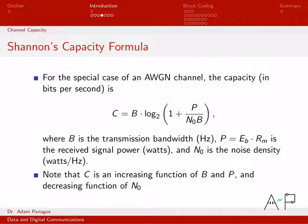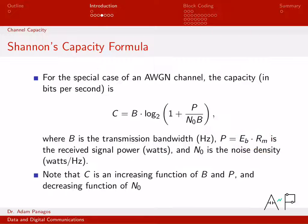C is the channel capacity, and it is equal to B — the bandwidth in hertz on the channel — times log base 2 of the quantity 1 plus P, where P is the received signal power. P can also be parameterized as the energy per bit times the data rate. Energy per bit times bits per second gives units of energy over time, which is indeed a power quantity.